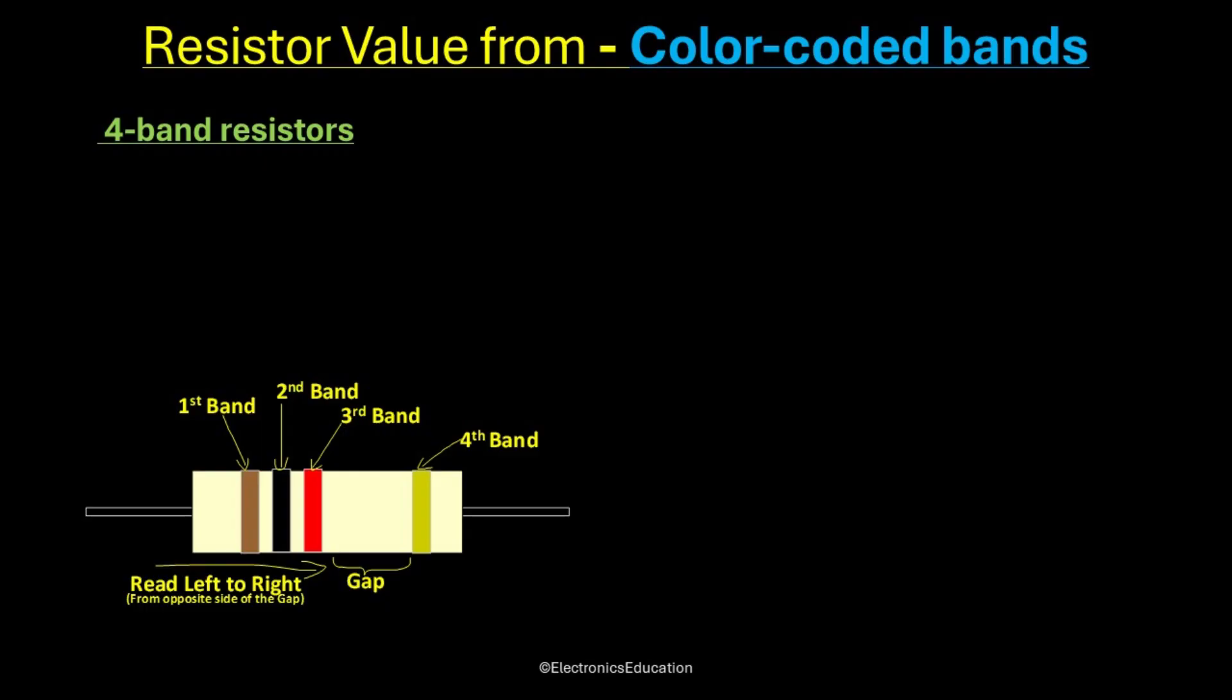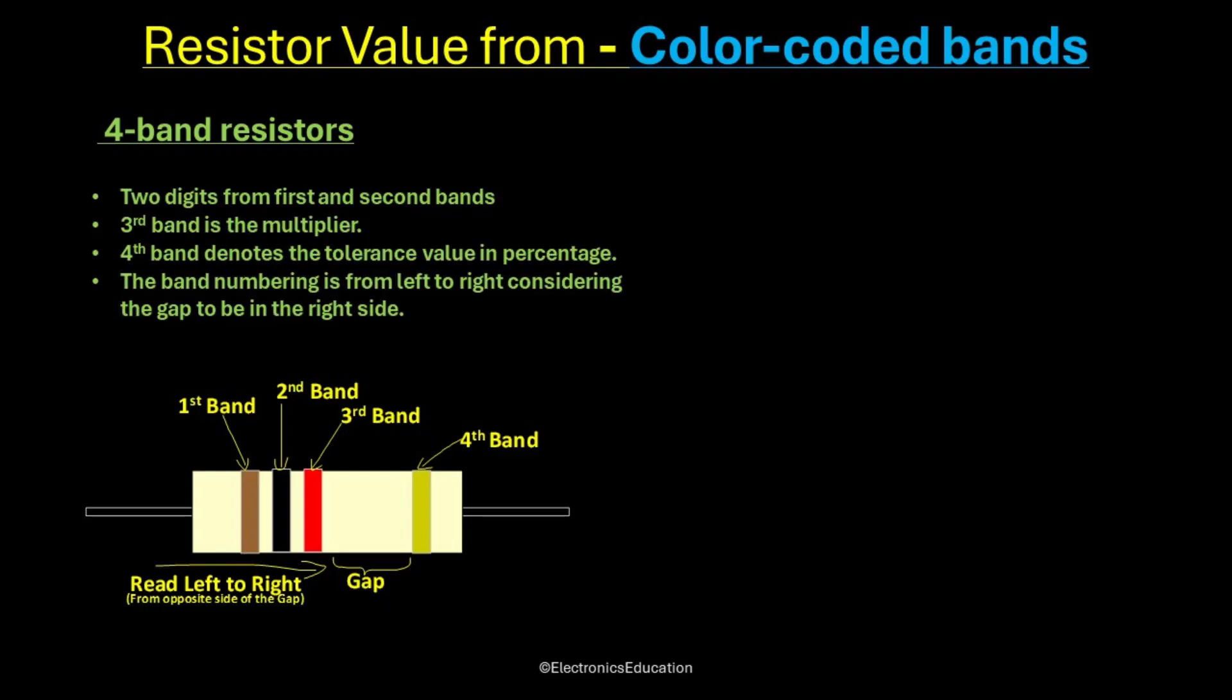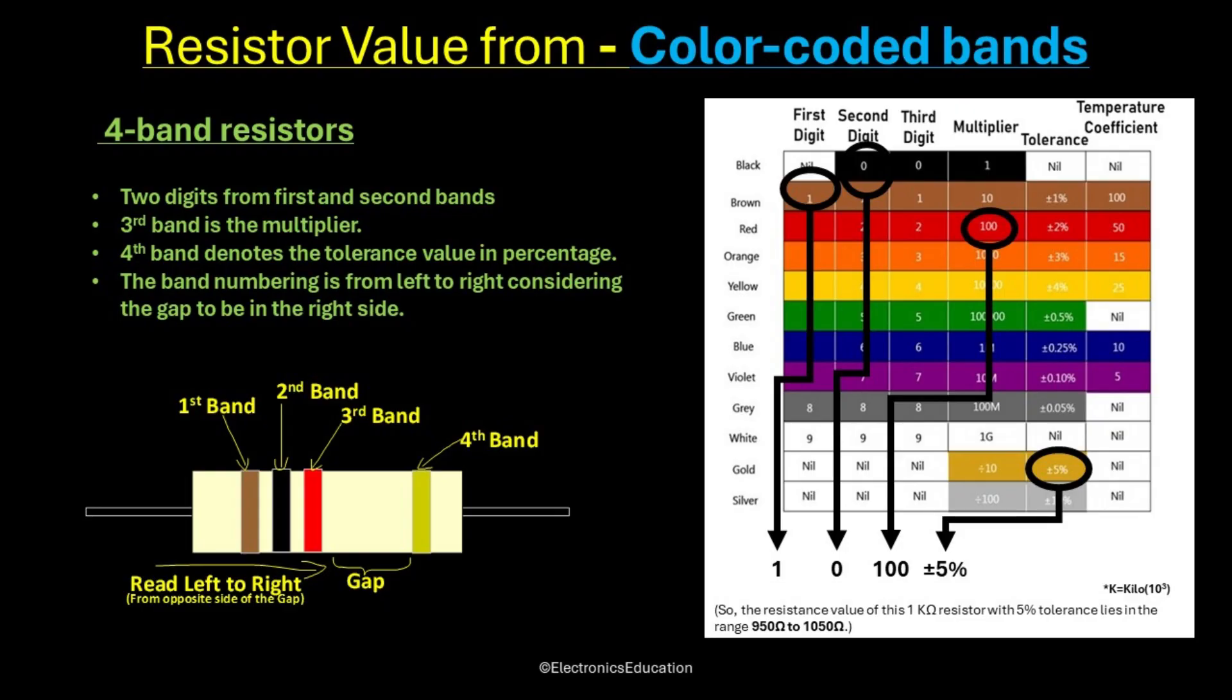Now for 4-band scheme, the same code reading convention is followed. Here also the first two digits are derived from the first two color bands by reading from left to right. And the third color band is the multiplier. The fourth color band in this scheme is used for the tolerance value.